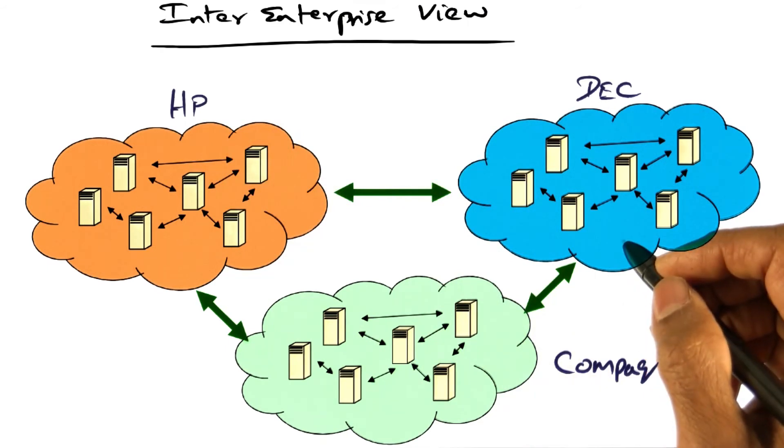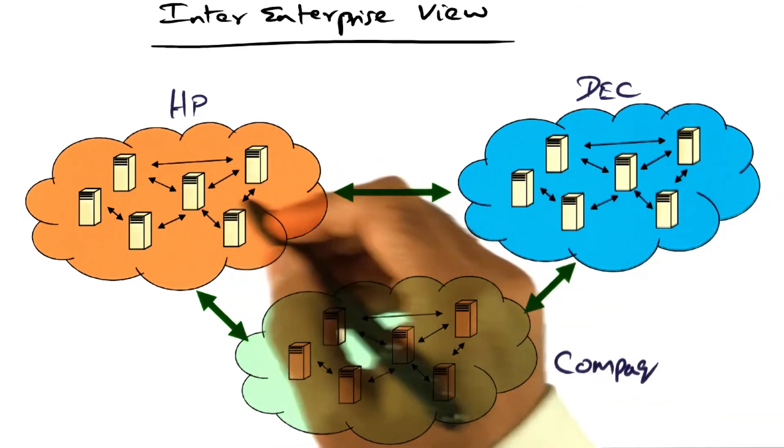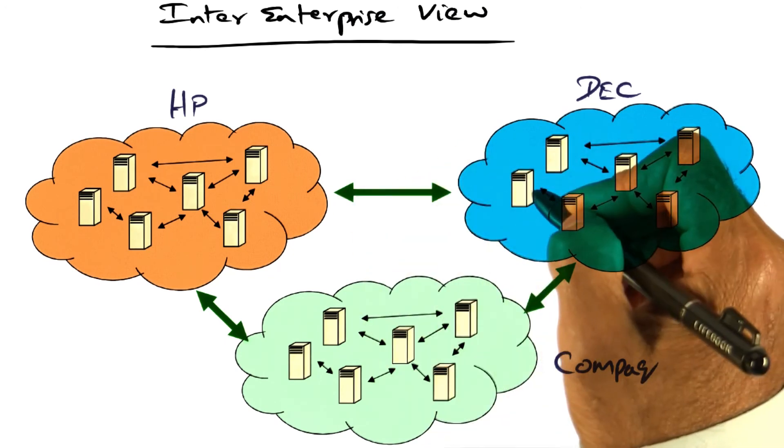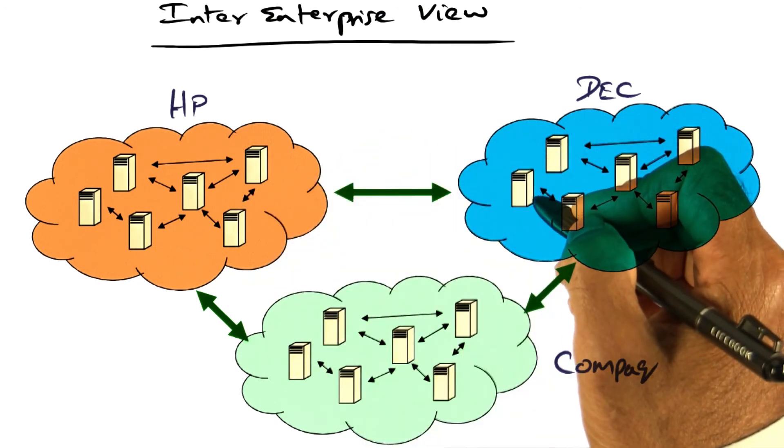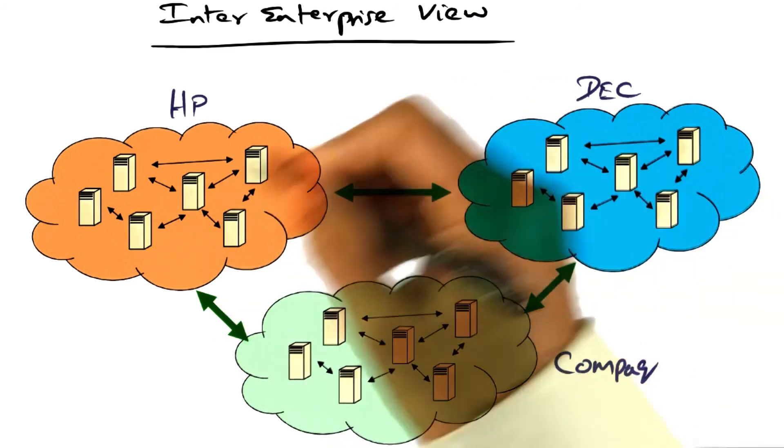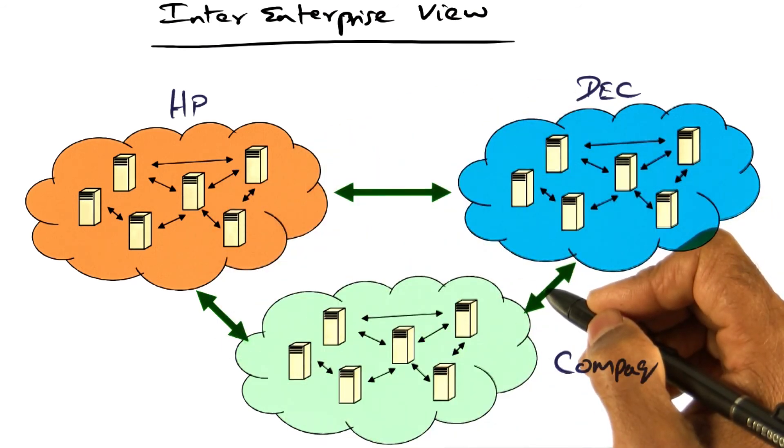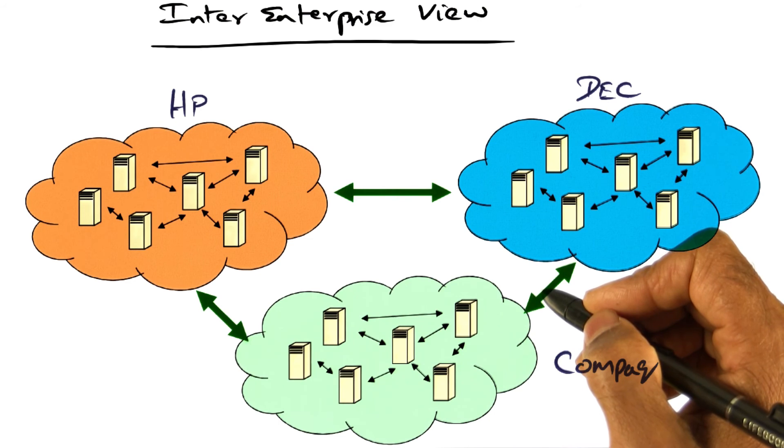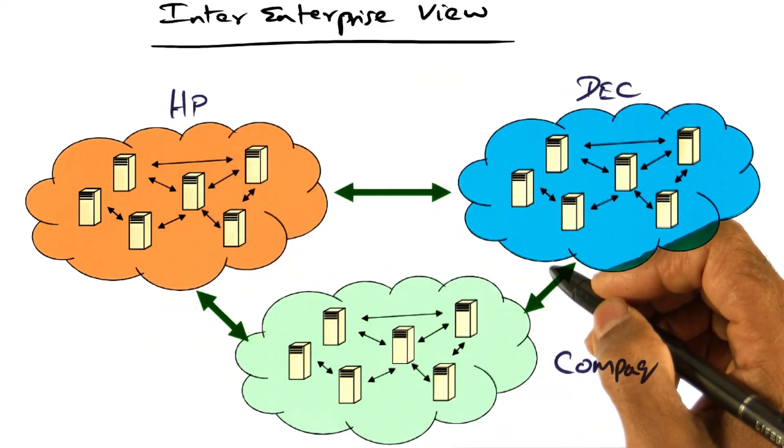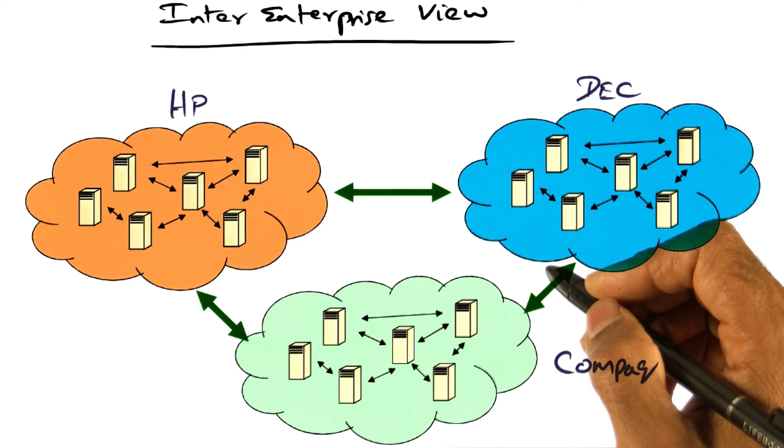So the enterprise transformation challenges are many. Interoperability of the systems that constitute different enterprises. Interface compatibility when such merging happens. System evolution—things are not stagnant, this transformed enterprise has to continuously evolve as well. Scalability, reliability, and the cost of maintaining a complex system like that. All of these things are the challenges that have to be faced both internally and across enterprises.